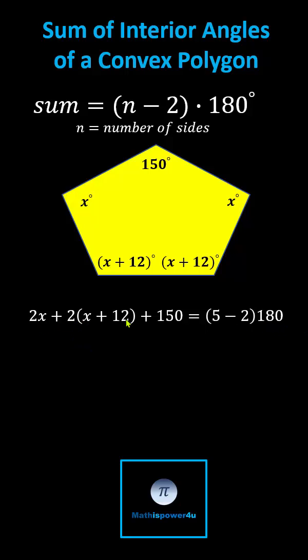Simplifying, we have two x plus two x plus 24 plus 150 equals three times 180, which gives us four x plus 174 equals 540.